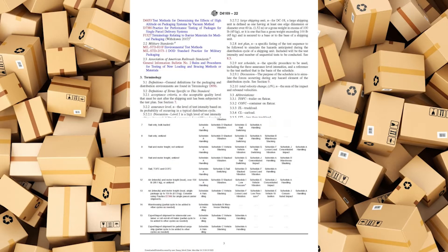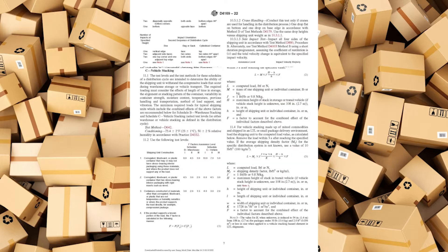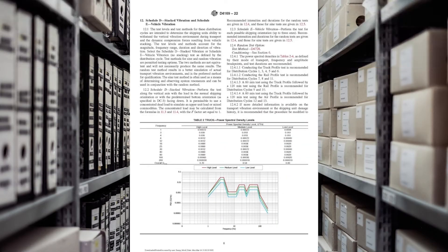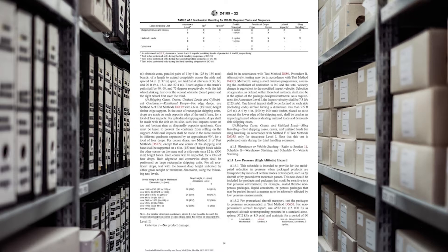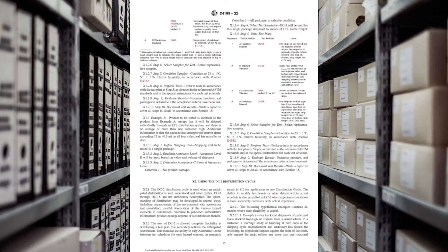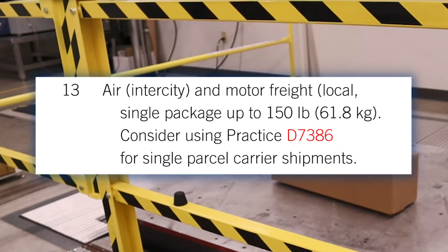ASTM D4169 provides several standardized testing pathways which represent a range of packaging configurations and distribution conditions. One of the most common workflows is Distribution Cycle 13, or DC 13, which simulates representative distribution challenges for a single package up to 150 pounds shipped via inter-city air and local motor freight.